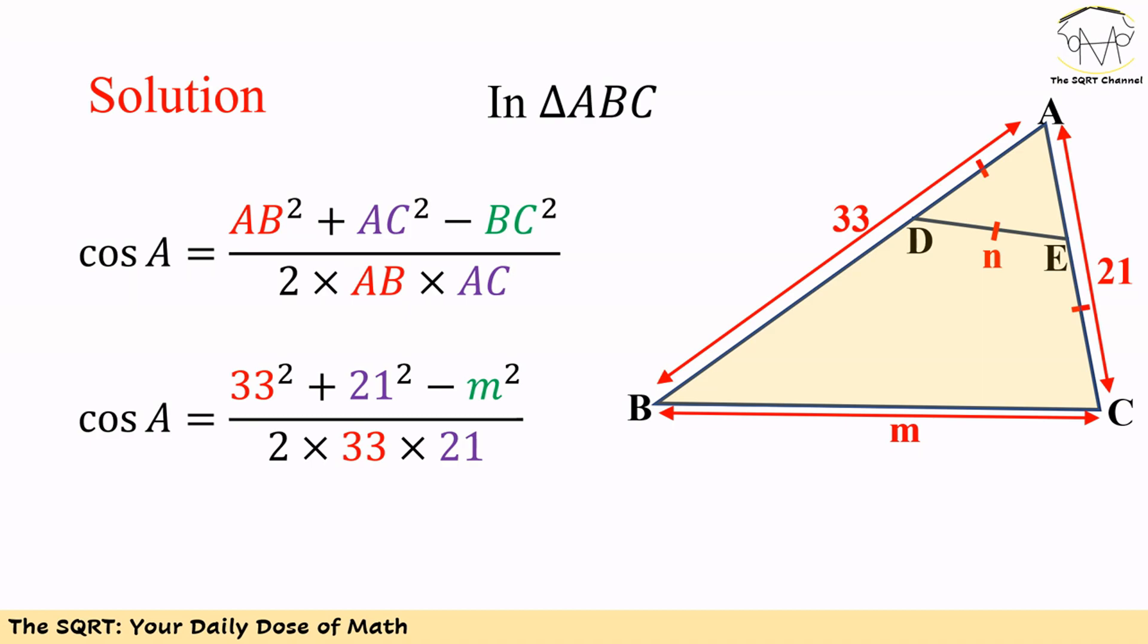BC is equal to M. If we replace the values, we are going to have cosine of A is equal to 33² plus 21² minus M² over 2 times 33 times 21.